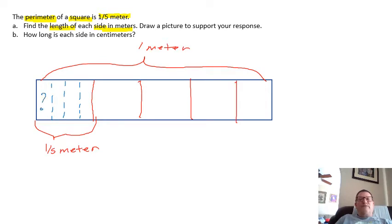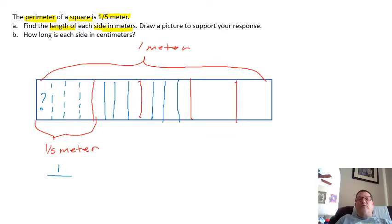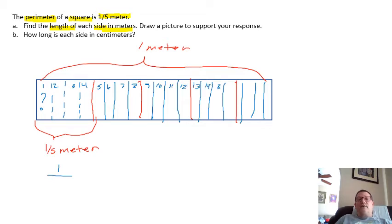We're wanting to find out what the size of each one of those sides is. We know the numerator would be one, because that's one side. In order to find the denominator, I've got to split up the rest of these fifths into fourths as well. Splitting each fifth into fourths, I can see there are four in each fifth. Counting them all up, that's twenty total pieces. So each one would be one-twentieth of a meter long.